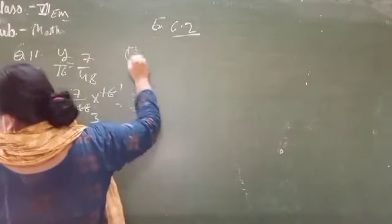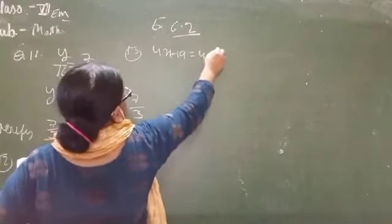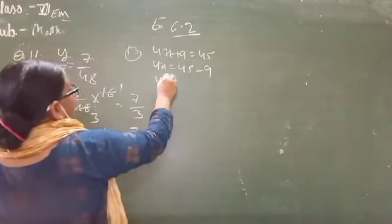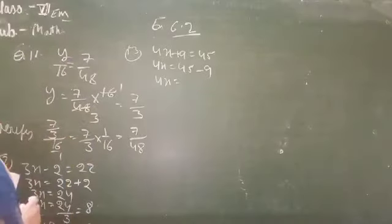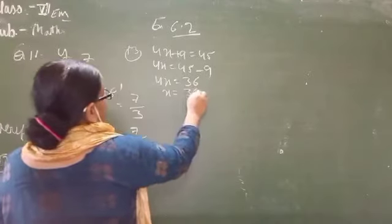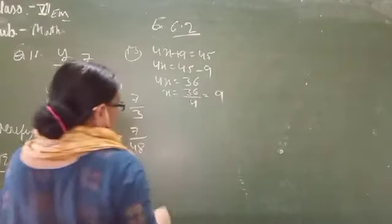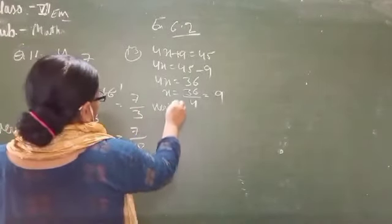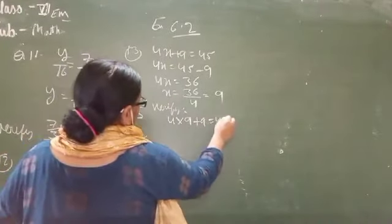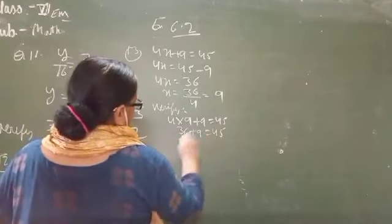Next, question number 13: 4x plus 5 equals 45. 4x equals 45 minus 5, which is 40. So x equals 40 upon 4. 4 divides into 36, which is 9. x equals 9. Now verify: 4 times 9 plus 5 equals 45. 36 plus 9 equals 45. Verified.